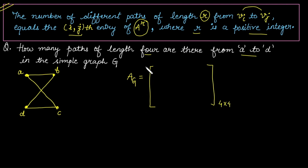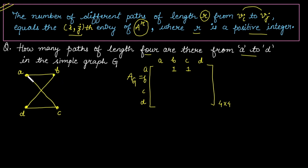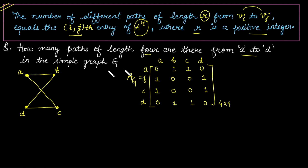We define the ordering of vertices as a, b, c, d for both rows and columns. Vertex a is adjacent with b and c, so row 1 has 1s in the 2nd and 3rd columns. Vertex b is adjacent with a and d. Vertex c is adjacent with a and d. Vertex d is adjacent with b and c. This gives us the complete adjacency matrix for graph G.